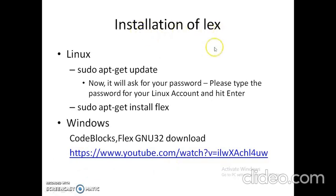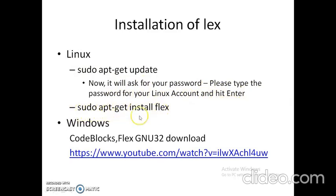To install lex on Linux, use the command 'sudo apt-get update'. It will ask for your password — type the password for your Linux account and hit Enter. Then install the flex tool using 'sudo apt-get install flex'. On Windows, you need to download Code::Blocks software and flex GNU 32 to run a flex program.